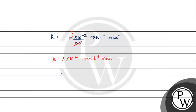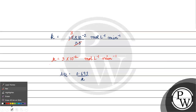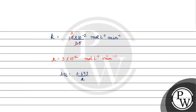Now, T½ is basically equal to 0.693 divided by K, which is 0.693 divided by 3 into 10 raised to the power minus 2 per minute. This gives us 69.3 divided by 3, which equals 23.1 minutes.